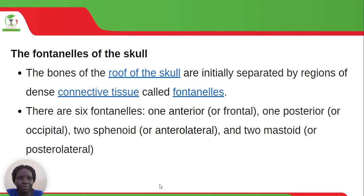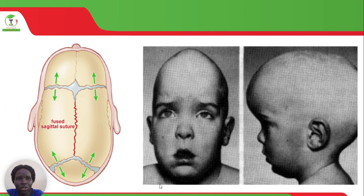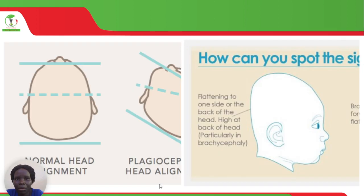The fontanels of the skull: the bones of the roof of the skull are initially separated by regions of dense connective tissue called fontanels. There are six fontanels: one anterior, also called the frontal; one posterior, also called the occipital; two sphenoid, also called the anterolateral; and two mastoid, also called the posterolateral. We also have a picture showing a normal head and an abnormal head — the abnormal one is where the occiput is flat instead of protruding.